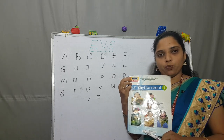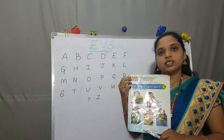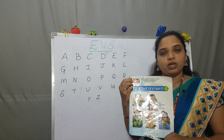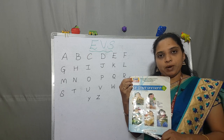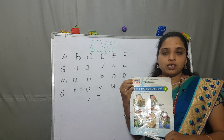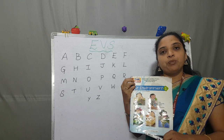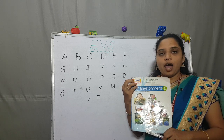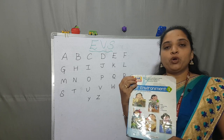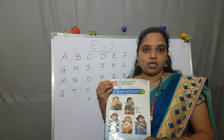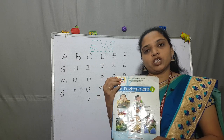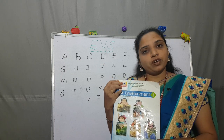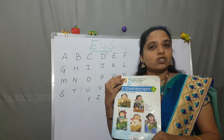This is your Class 1 Environmental Studies textbook. In this textbook we will learn about our body parts, plants, animals, and other beautiful things which our planet is having. We have so many beautiful things around us which can move, which can grow, and which can also have different changes.